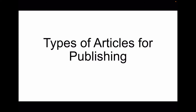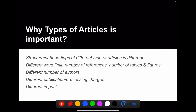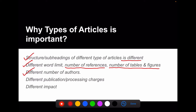Hello friends. In this video we are going to discuss about types of articles for publishing in scientific journals. Why types of articles is important? First, you should understand that the structure and subheadings of different types of articles are different. The word limit is different, number of references will be different, and number of tables and figures also will be different. There are different numbers of authors, different publication and processing charges, and different impact for different types of articles.